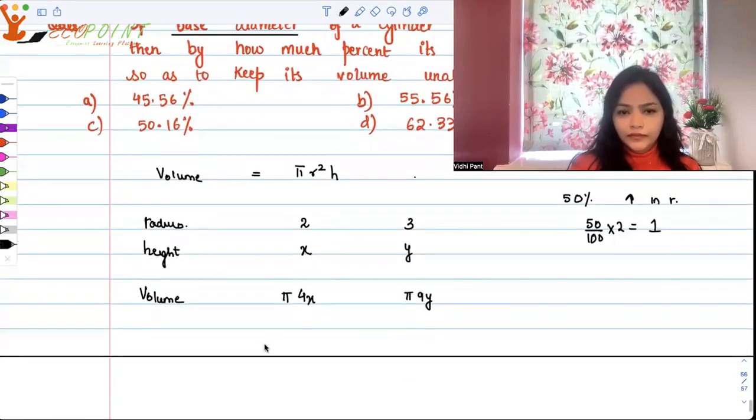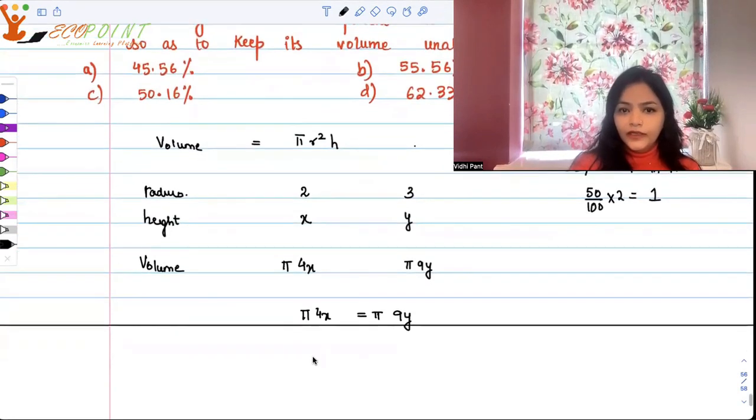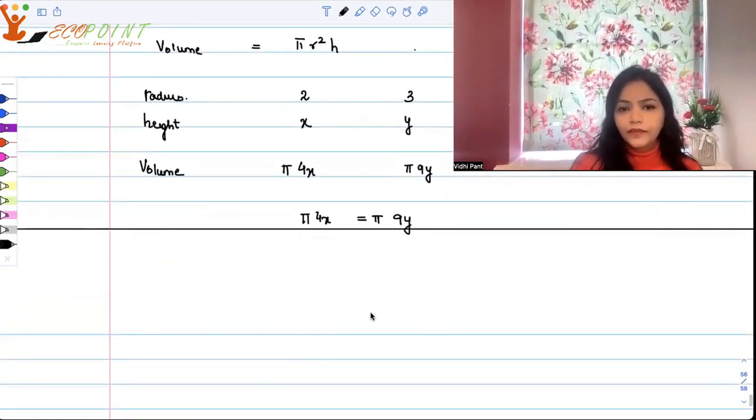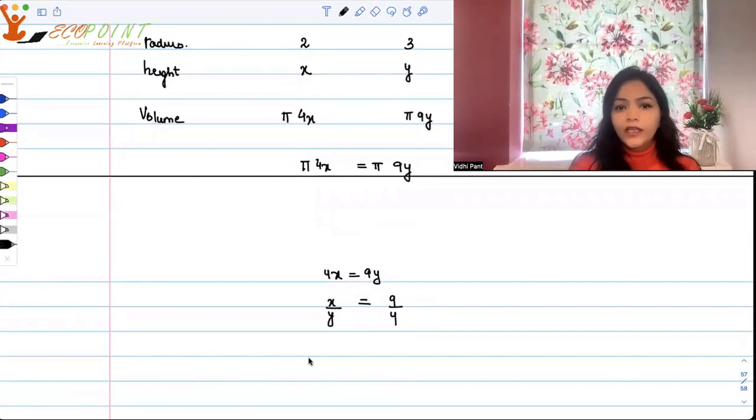If I have to keep the volume equal, that means 4x should be equal to 9y. This means x by y is equal to 9 by 4.